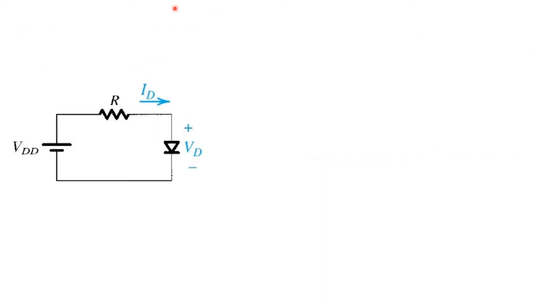Let's consider the analysis of this simple diode circuit shown here, consisting of a voltage source with a value V_DD and then a series combination of resistor R and diode. We're interested in the voltage across the diode and the current flowing in this loop. Now to find the two unknown variables I_D and V_D, we need a couple of equations. One is simply given by Ohm's law, which must be satisfied by the voltage and current in the resistor R.